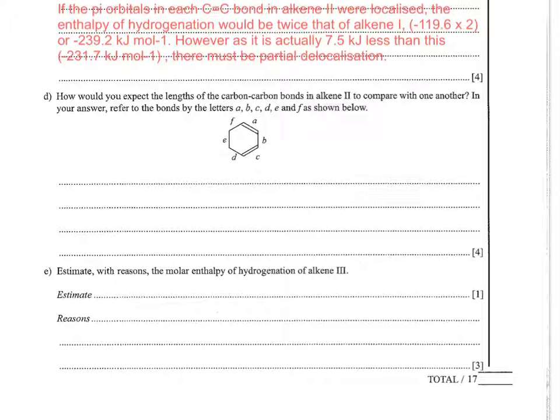It says, how would you expect the lengths of the carbon-carbon bonds in alkene 2 to compare with one another? There's obviously two types of bonds: carbon-carbon single bonds and carbon-carbon double bonds. To enable you to do this, for the next four marks, they're labelling each bond individually as A, B, C, D, E, and F.